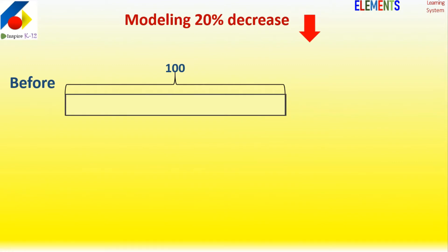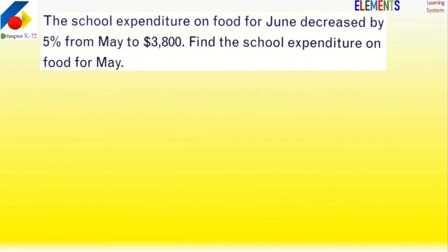Similarly for decrease: 100, and the new after will be 80 simply. We can divide it like this. That is the method for percentage going up and down. Now let's use it: school expenditure on food for June...